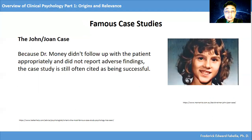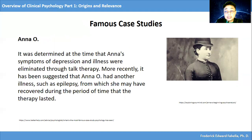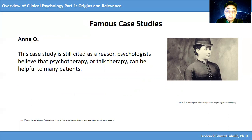Let's consider the case of Anna O. Anna O was the pseudonym given to a German woman who was one of the first people to undergo psychoanalysis. Her case inspired many of the theories of Freud and other prominent psychologists of the time. It was determined that Anna's symptoms of depression and illness were eliminated through talk therapy. More recently, it has been suggested that Anna O had another illness such as epilepsy, from which she may have recovered during the period of time that the therapy lasted. This case study is still cited as a reason psychologists believe that psychotherapy or talk therapy can be helpful to many patients.